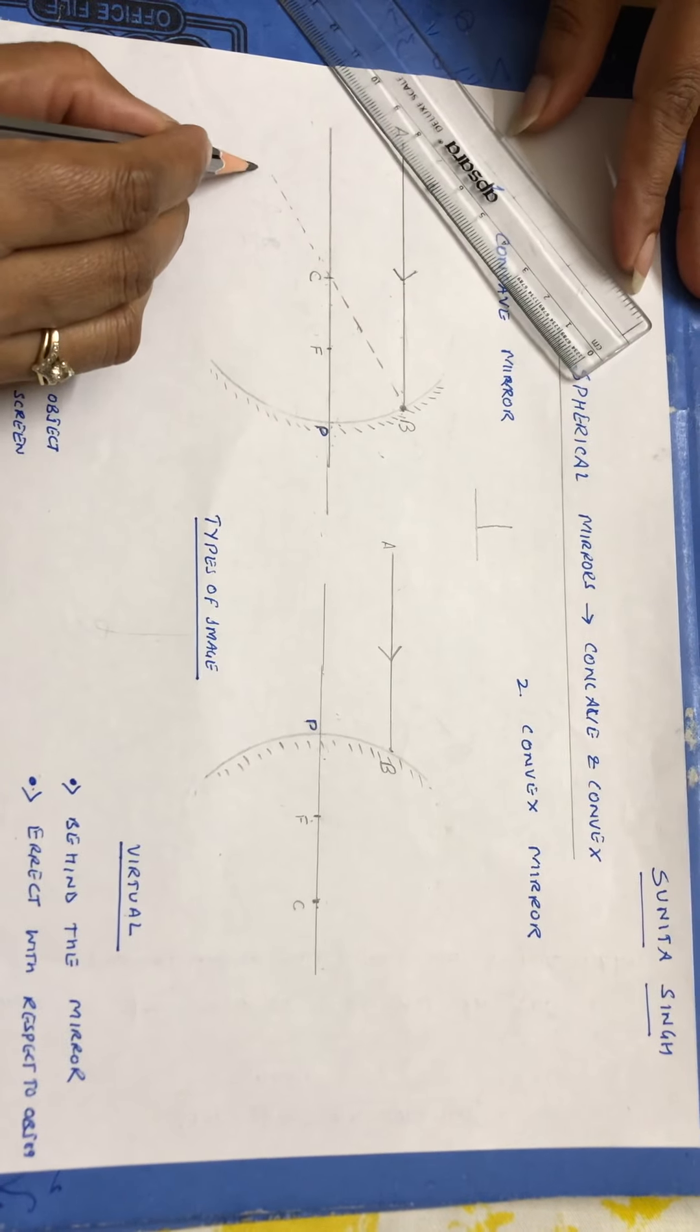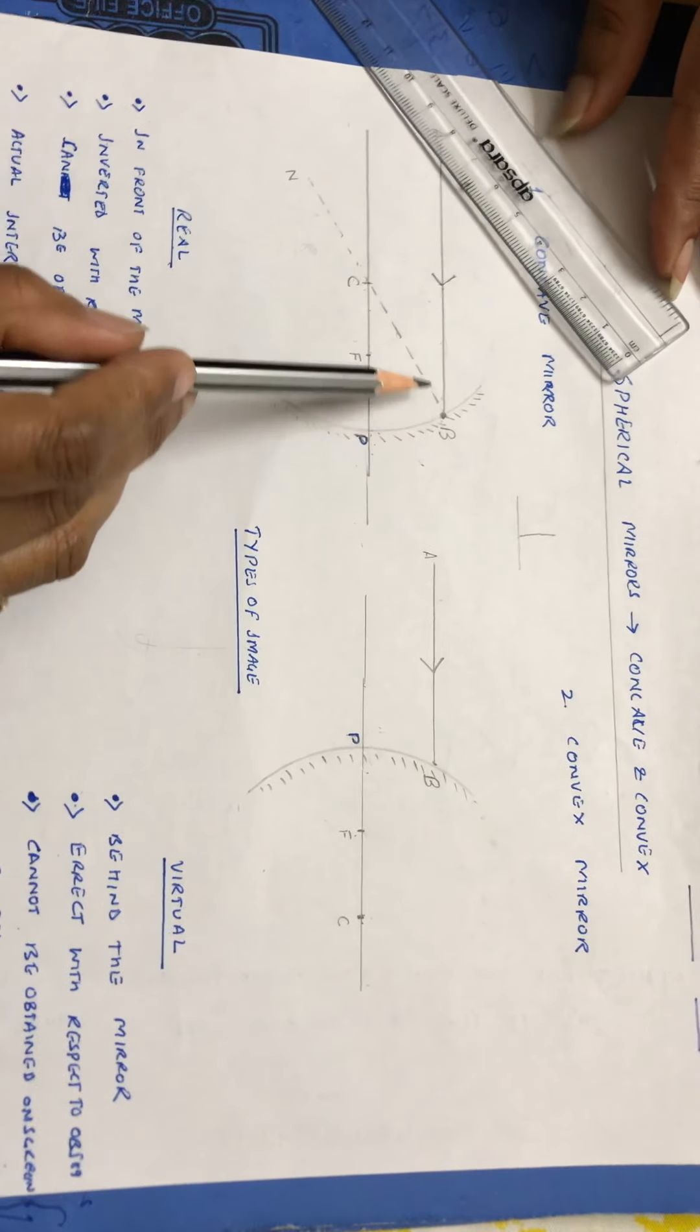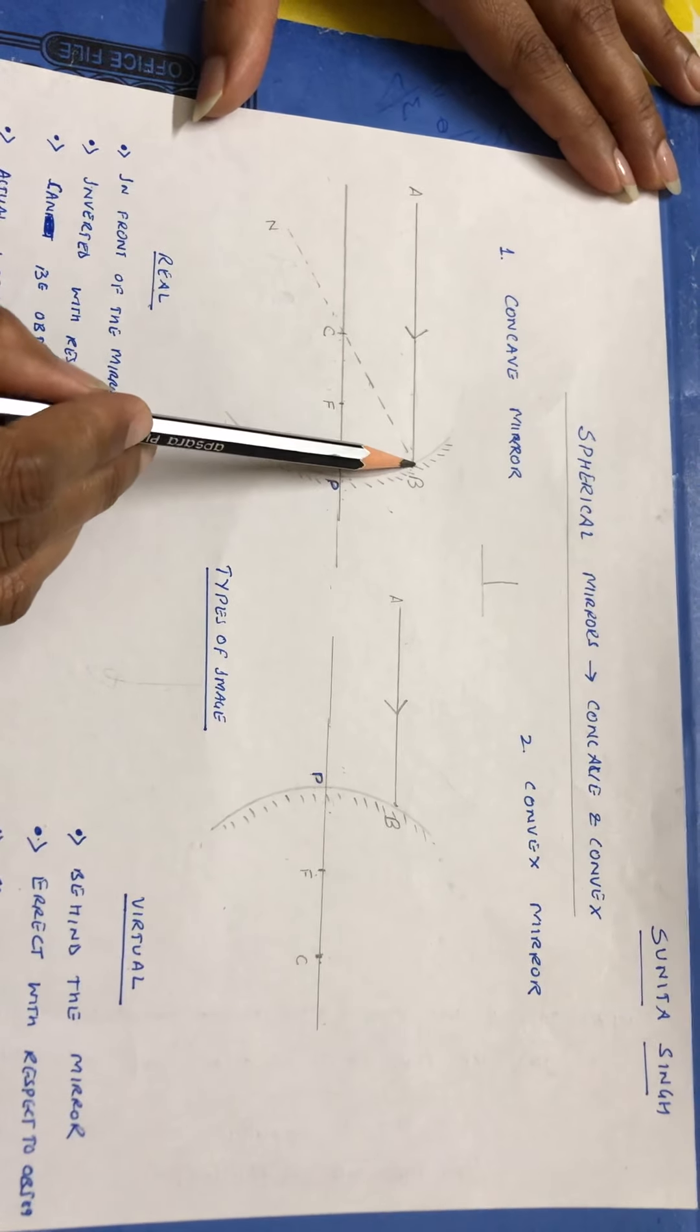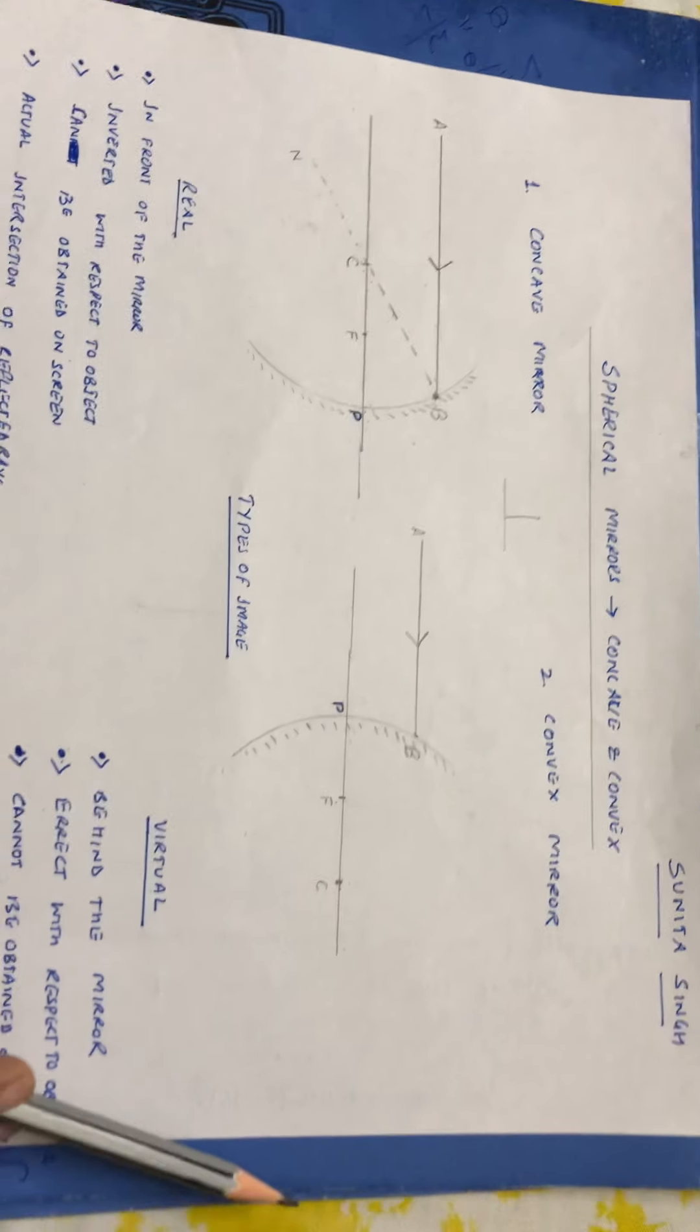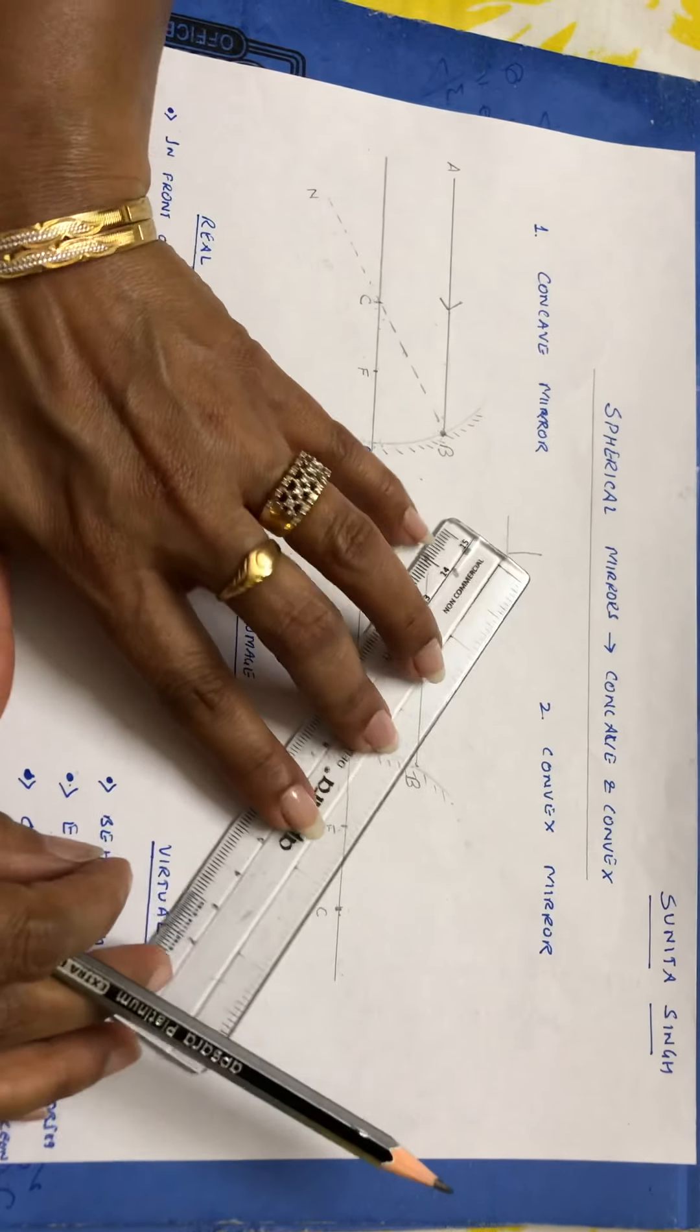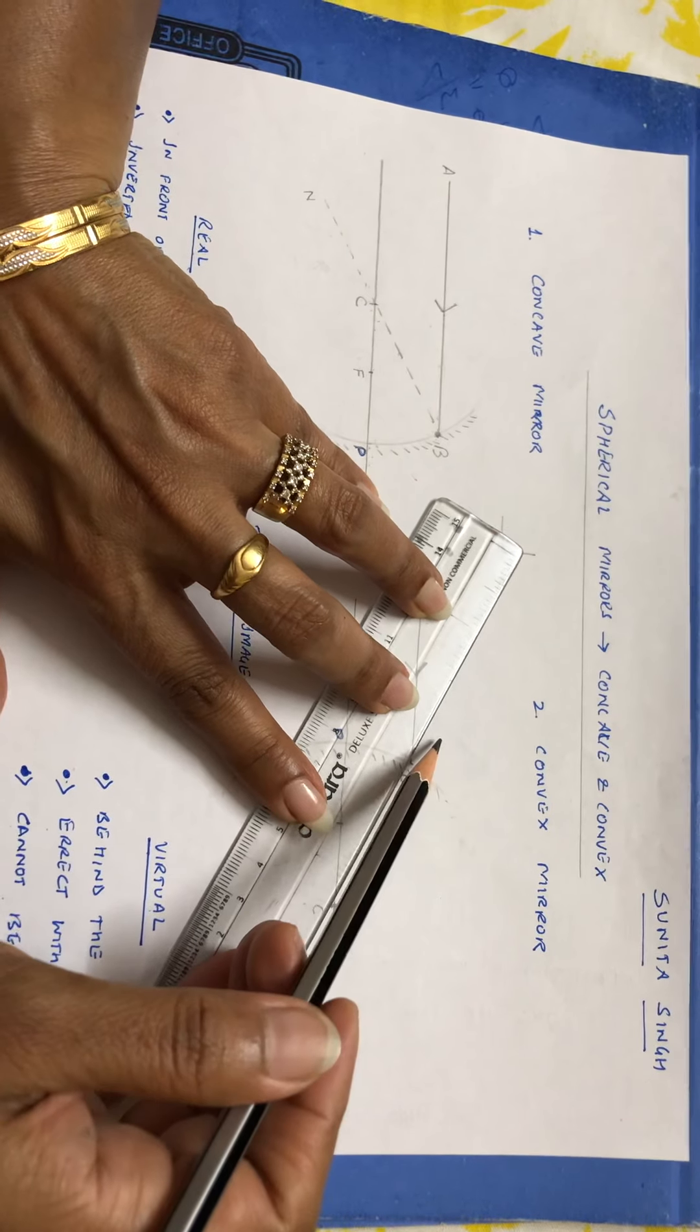So this line, if I mark it as N, this is the normal. So what is the normal for a spherical mirror? It is the straight line joining the point of incidence to the center of curvature. Similarly, if we see here, this is the point of incidence and this is the center of curvature. So how will its normal be formed? We will join the point of incidence to the center of curvature.